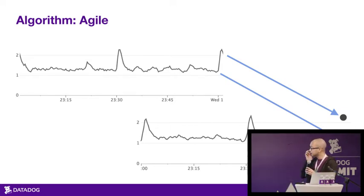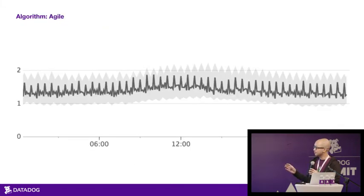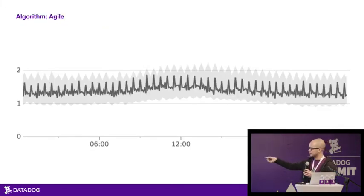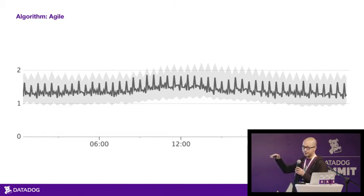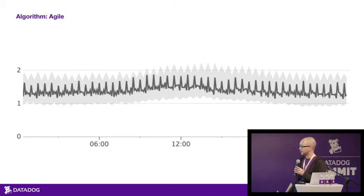This allows the predicted range to be sensitive to immediate trends — you see there's a slight dip, and even if it's not part of a larger trend, Agile will pick that up. It also captures longer-term trends and seasonality, so you get both the seasonal behavior and the different trends.